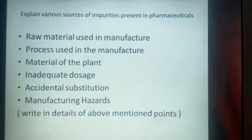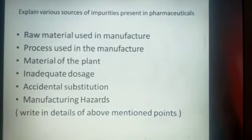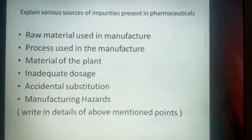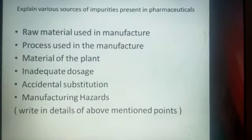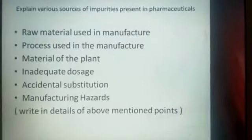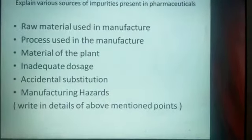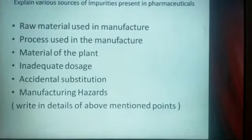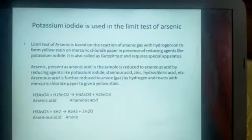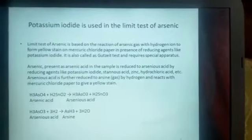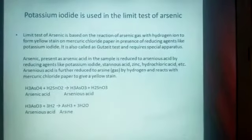Another example: 'explain the various sources of impurities present in pharmaceuticals.' The sources of impurities include raw materials, the manufacturing process, materials of the plant, and irregular doses. You have to write in detail about the main dimension points according to the marks allotted.